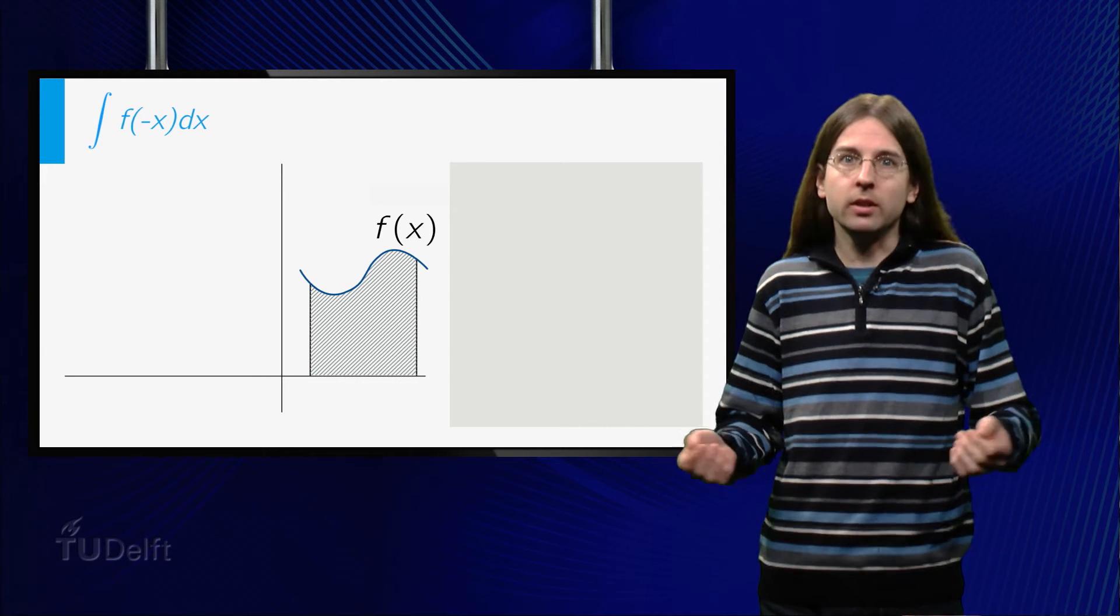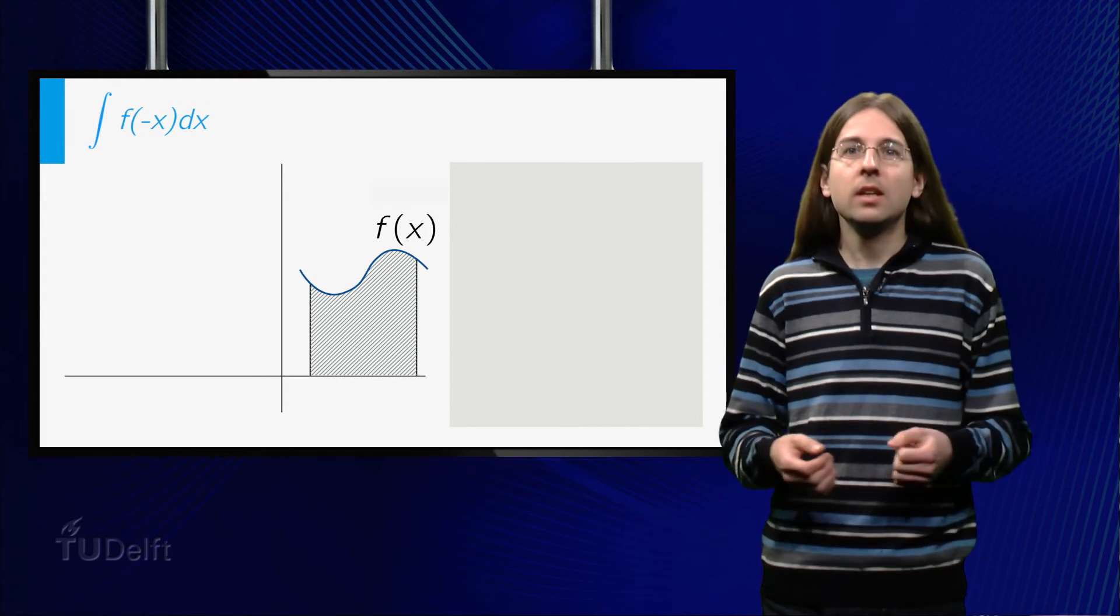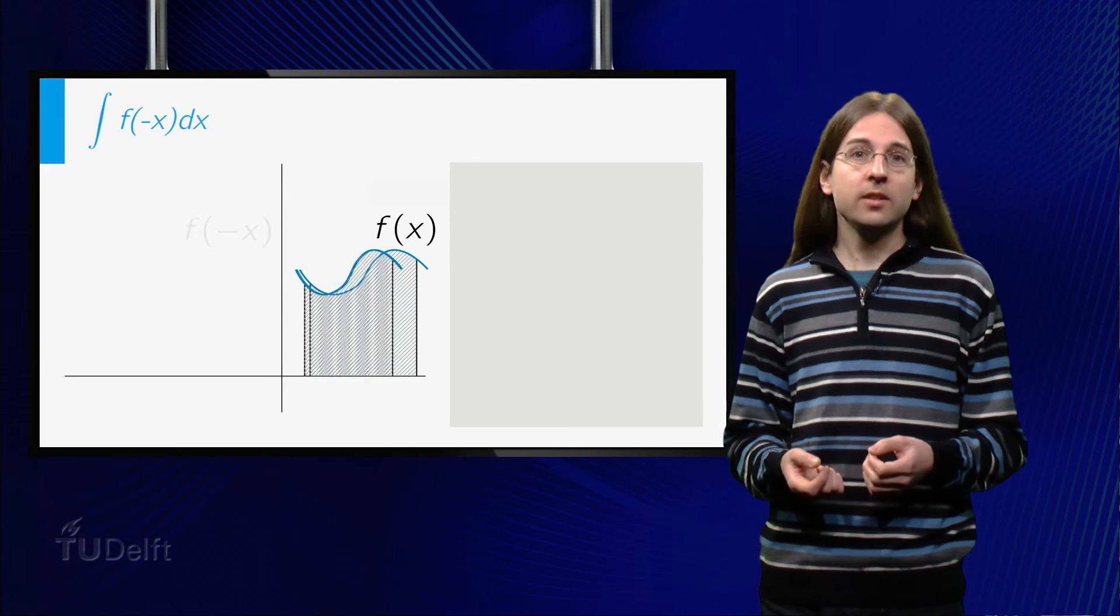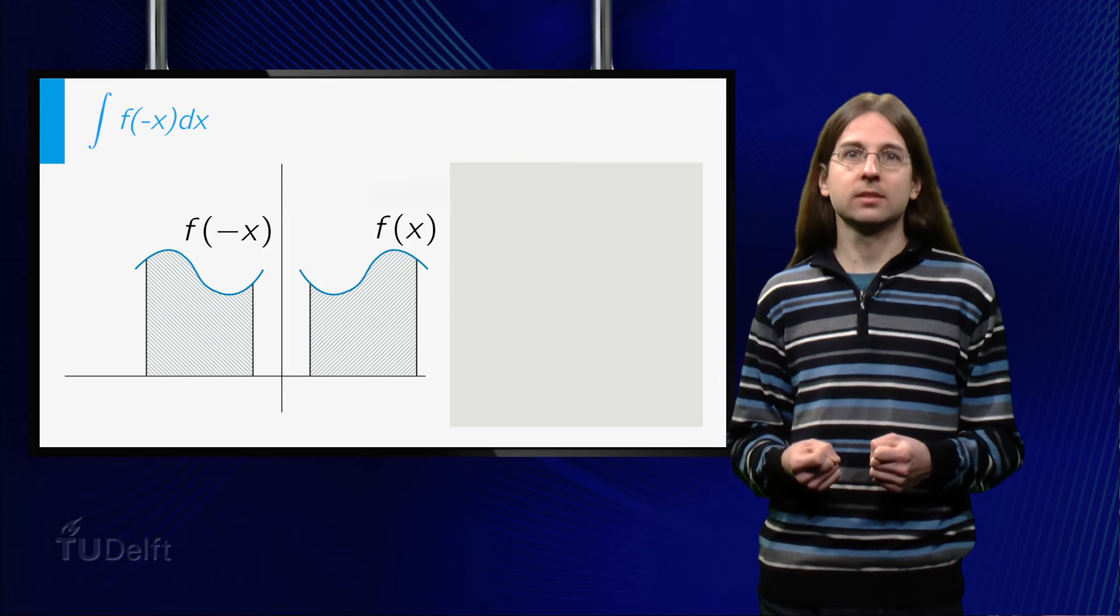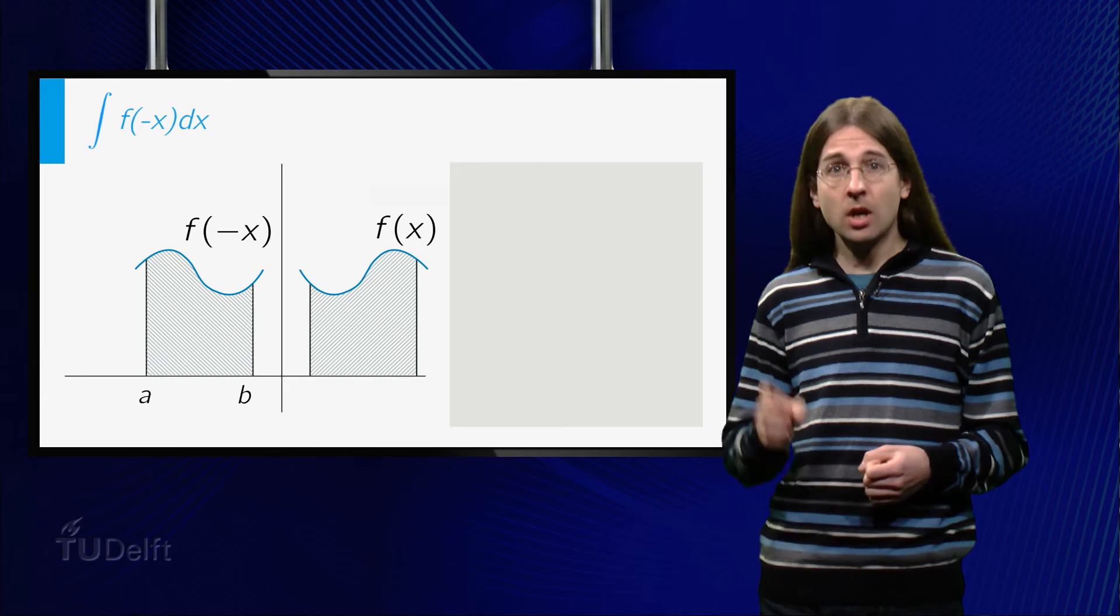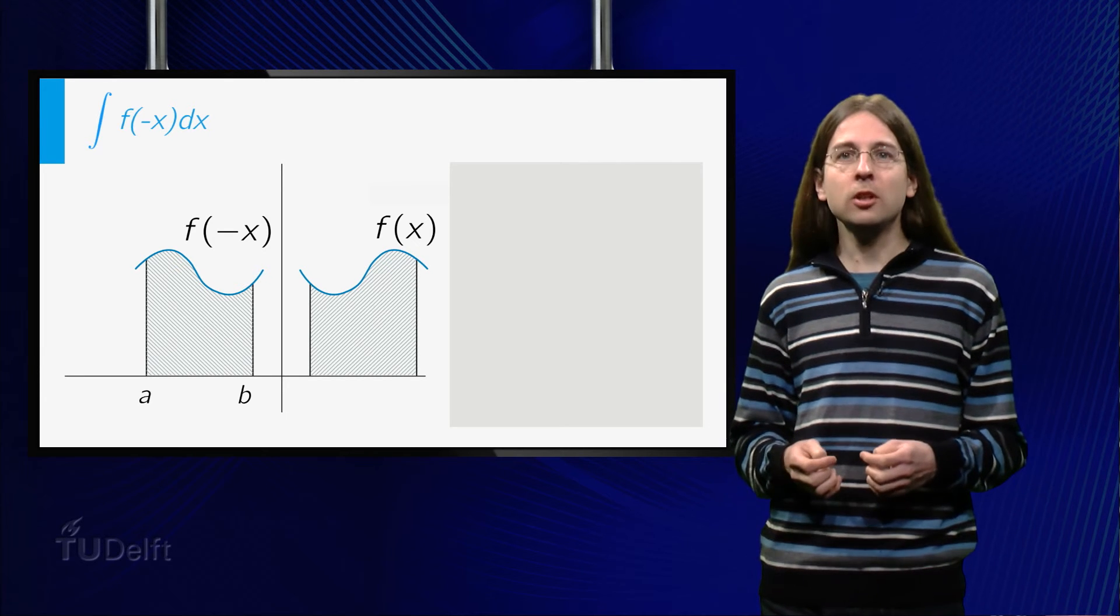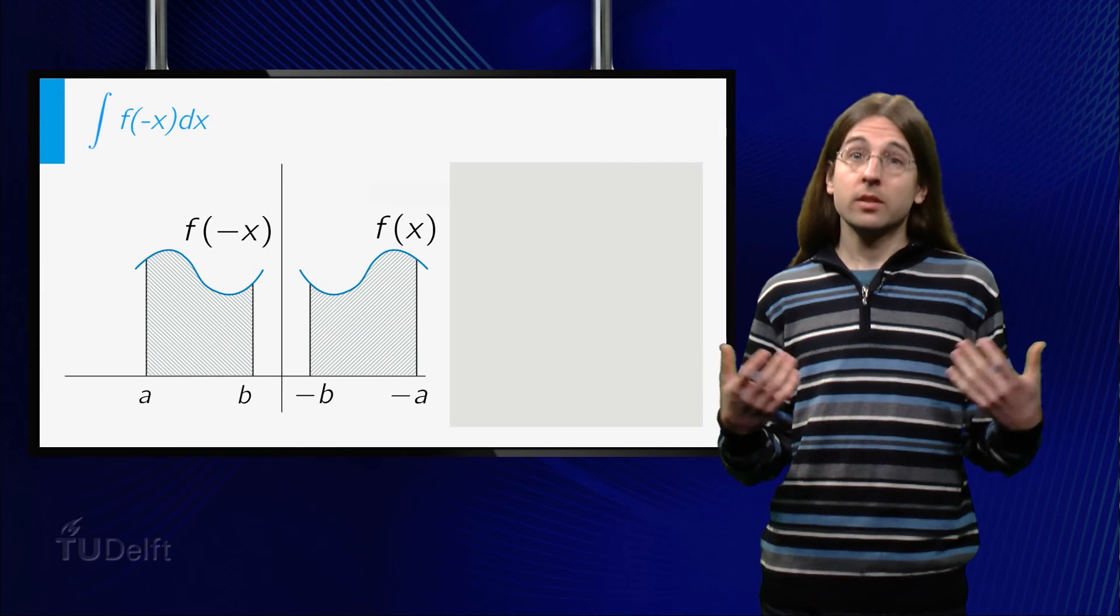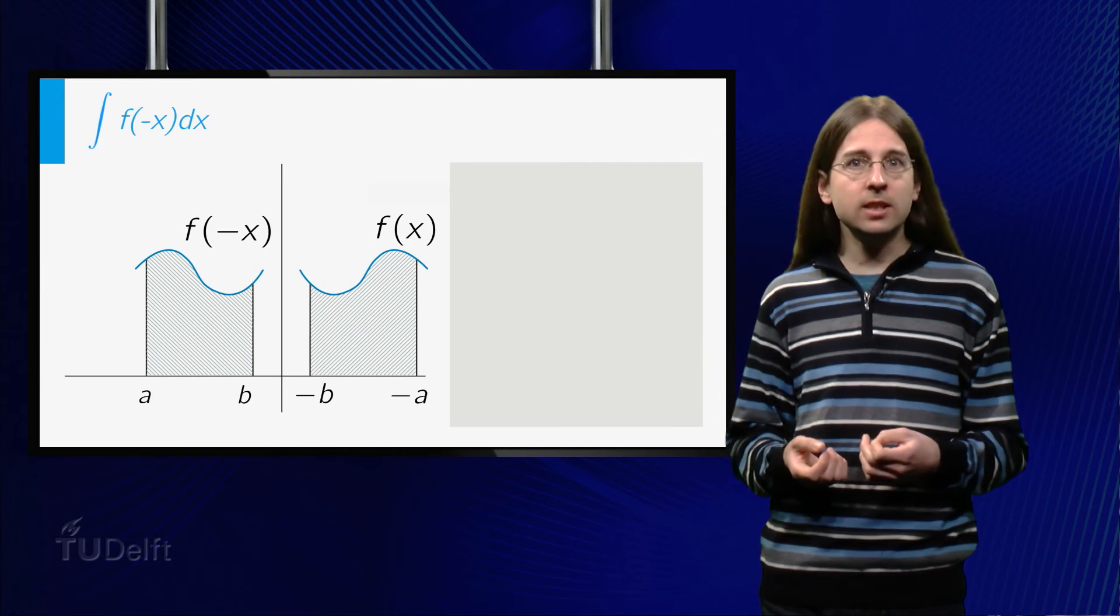One might wonder what happens if c is negative. Well, let's consider the graph of f of minus x. This is the reflection of the graph of f of x in the y axis. The area under the curve remains equal. However, notice that the order of the starting point and the end point have been interchanged. Thus, we have to add a factor minus 1 to account for this change.